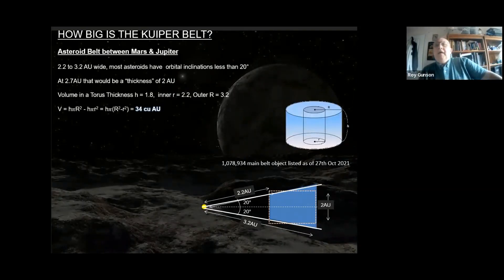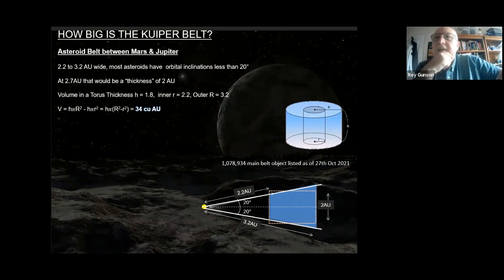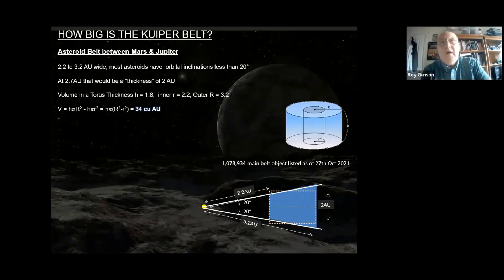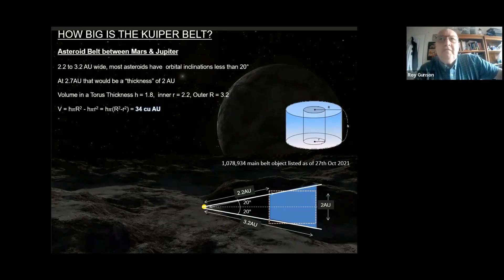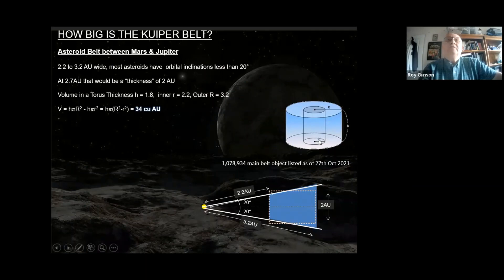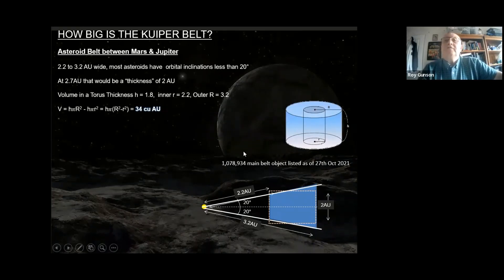How big is the Kuiper Belt? I'll compare it with the asteroid belt. The asteroid belt runs from 2.2 to 3.2 AU, with inclinations of about 10–20 degrees. Treating it as a torus with inner radius 2.2 AU and outer radius 3.2 AU, using the volume formula π × r² × h for a cylinder, we can work out that the volume of the torus containing most of the asteroid belt is about 34 cubic AU.